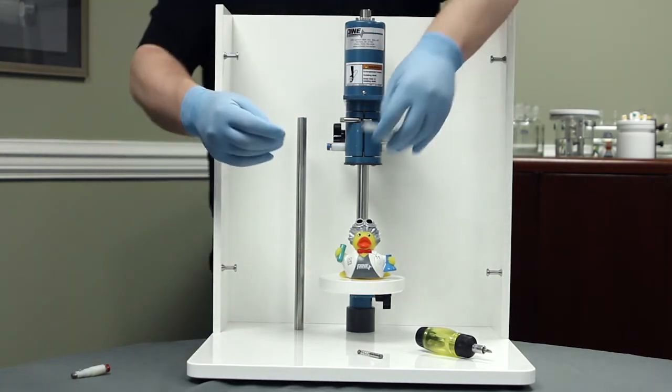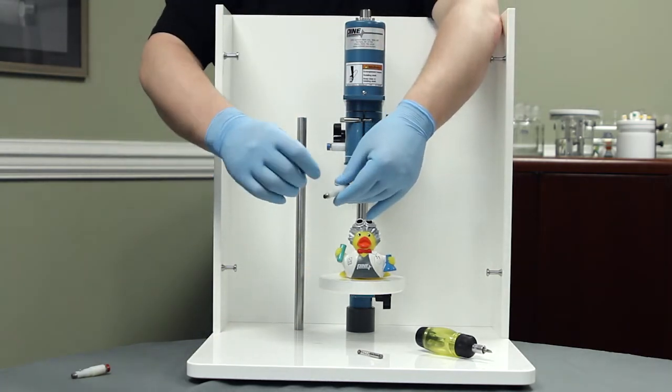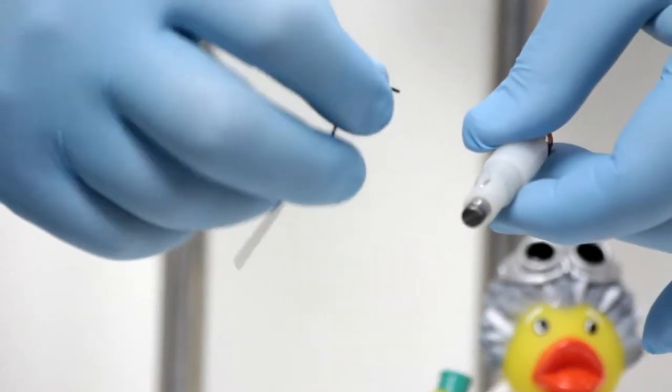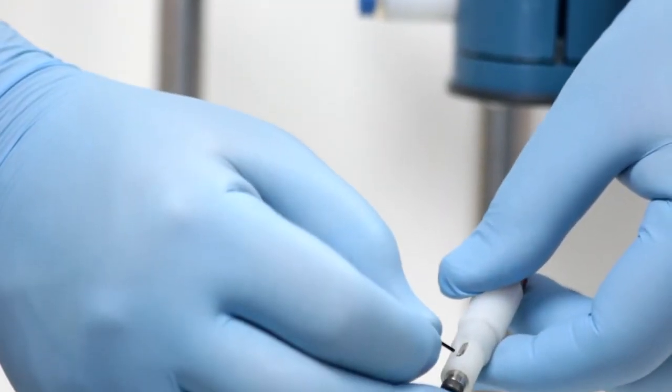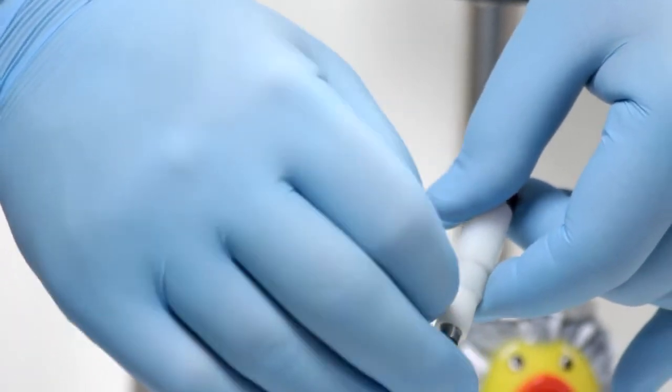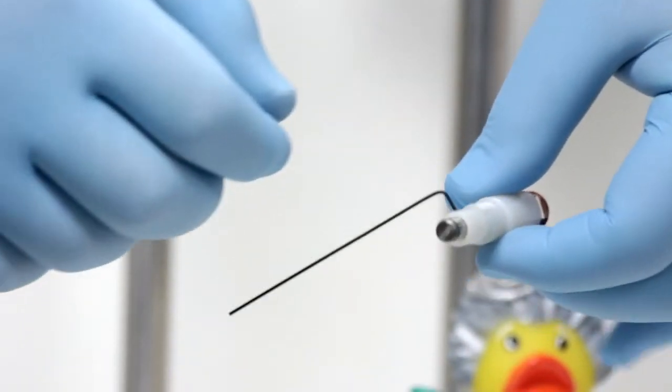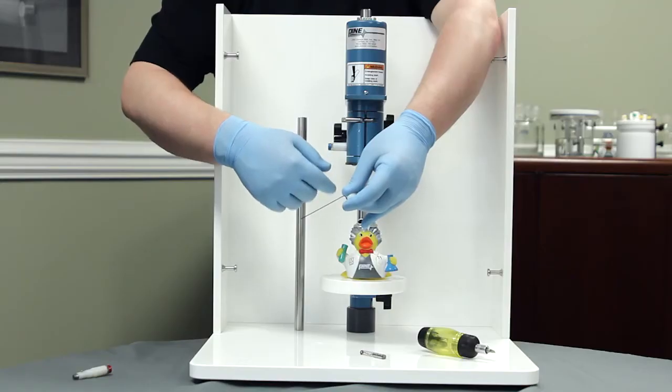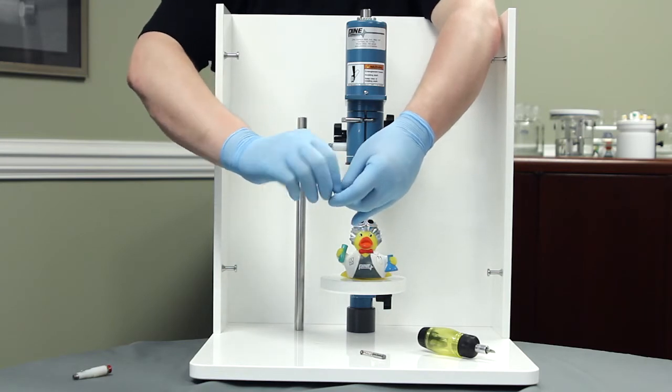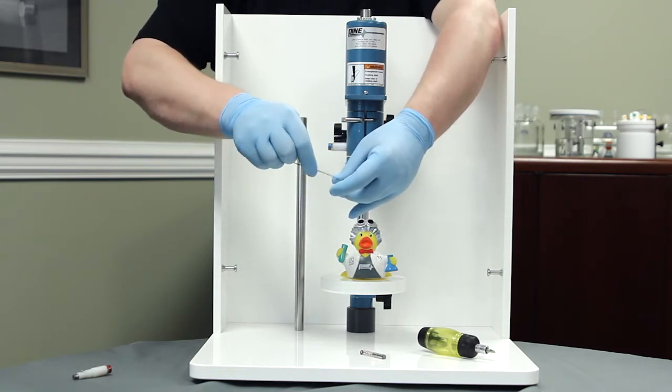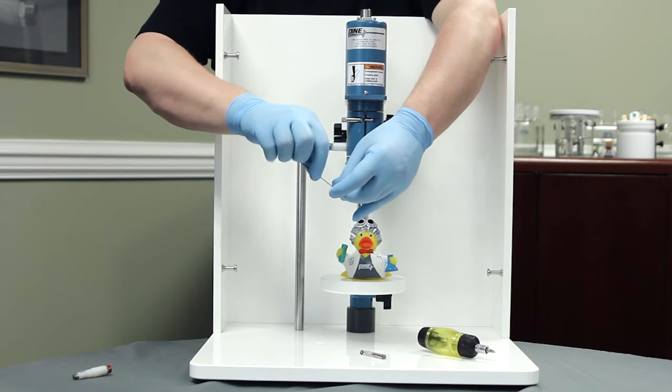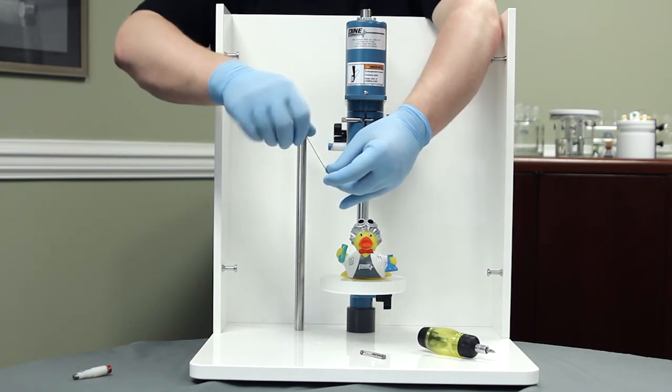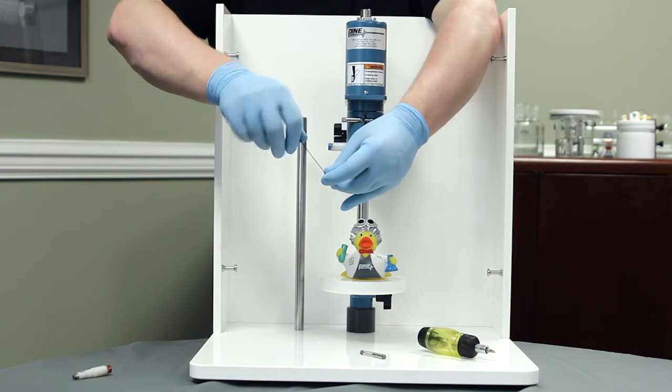Next, from the brush assembly replacement kit, take the hex key and place it into the set screw. Because this is spring-loaded, you're going to want to put your finger on the brush such that when I loosen this and eventually remove the set screw, the brush does not come flying out.